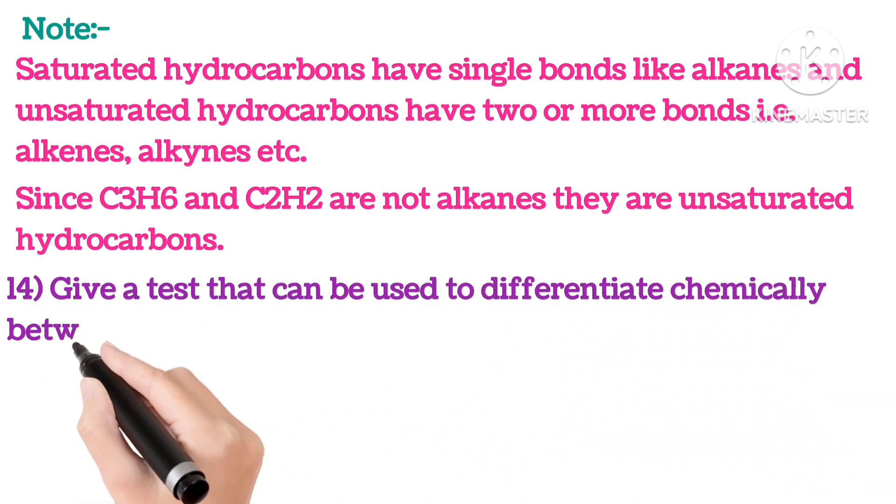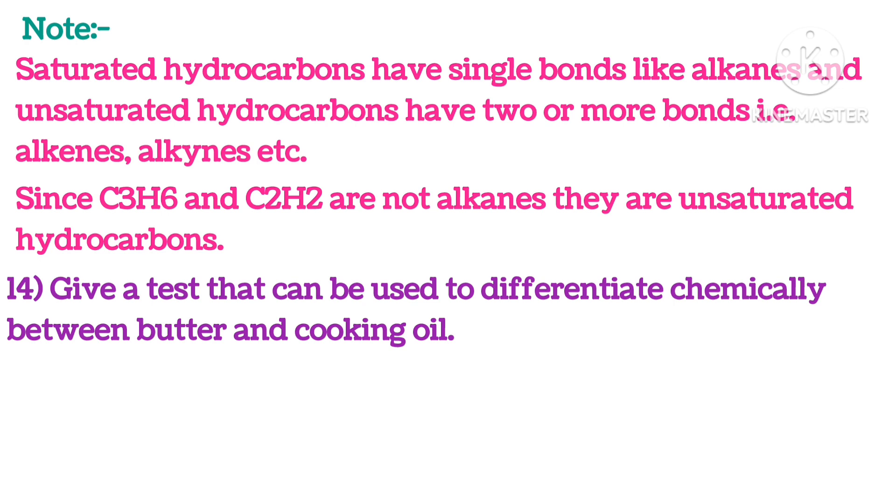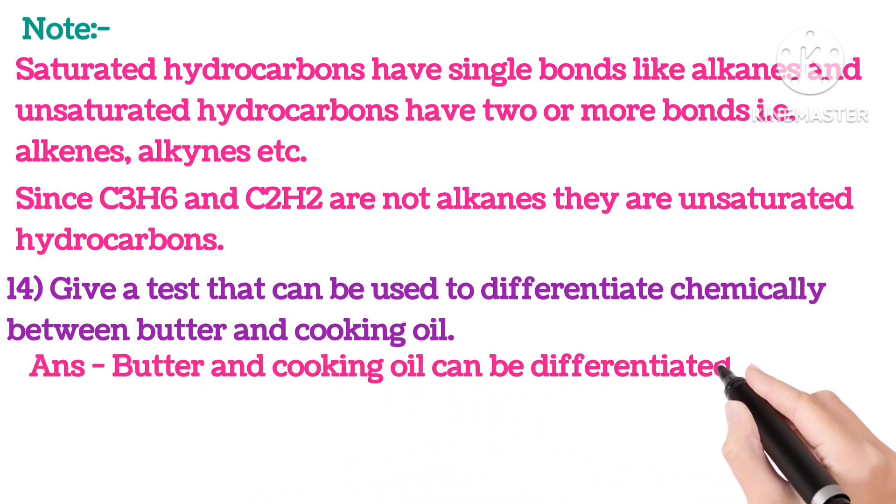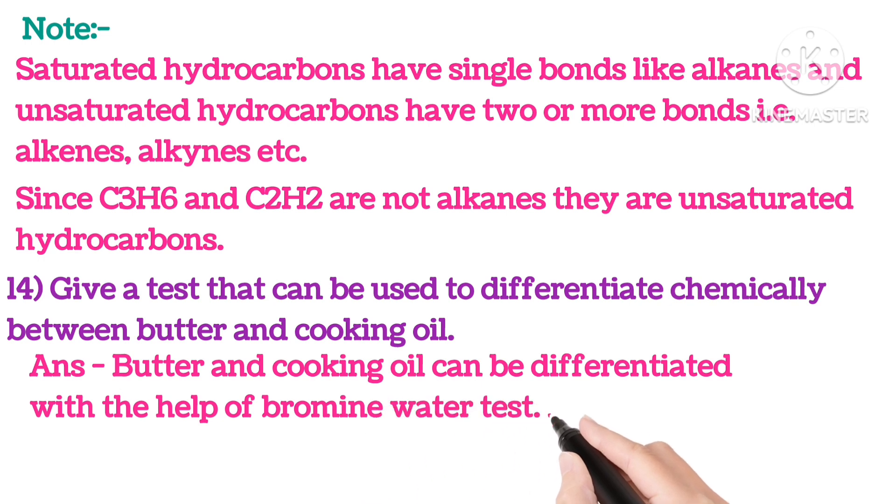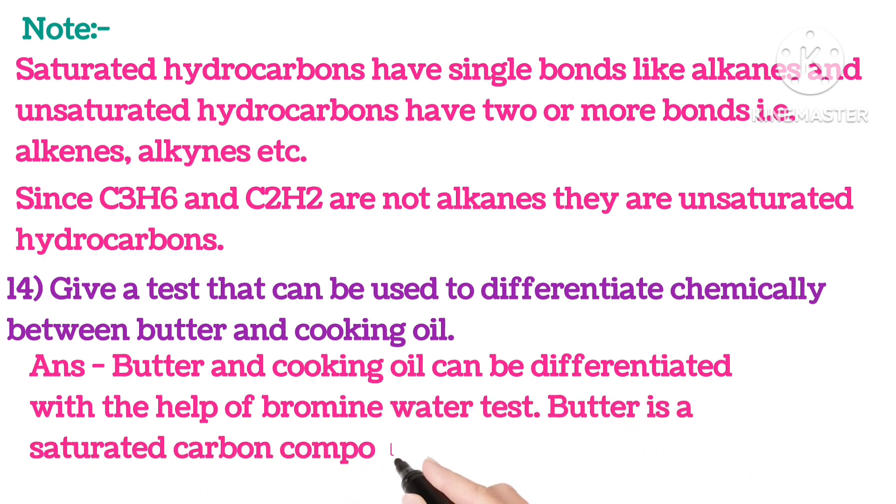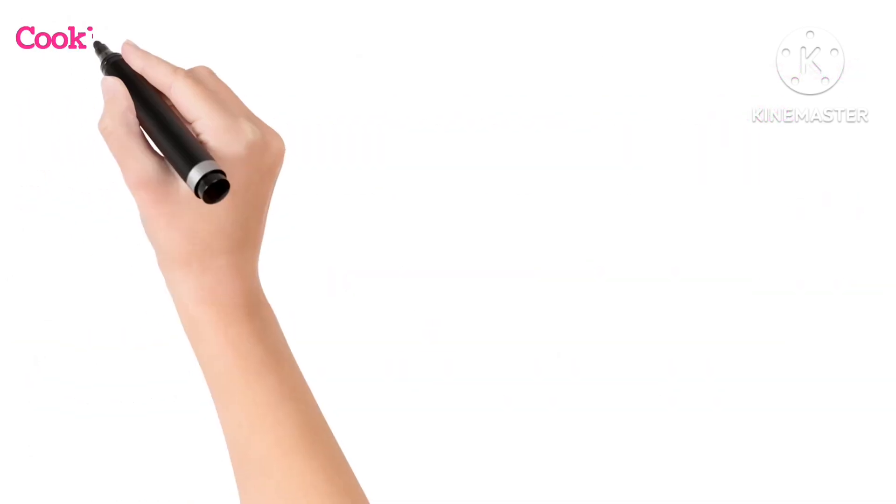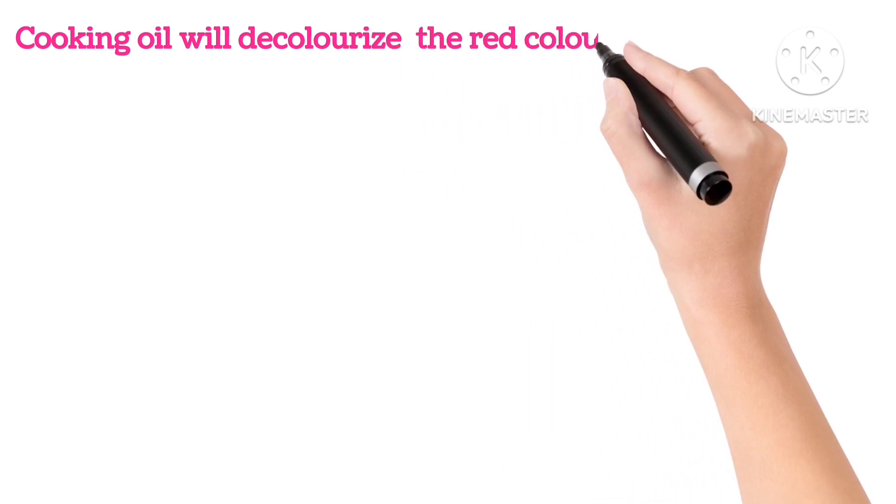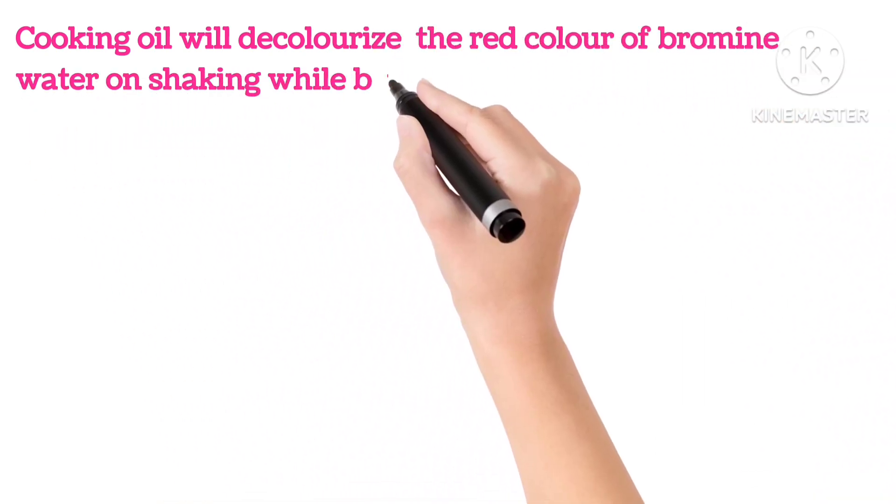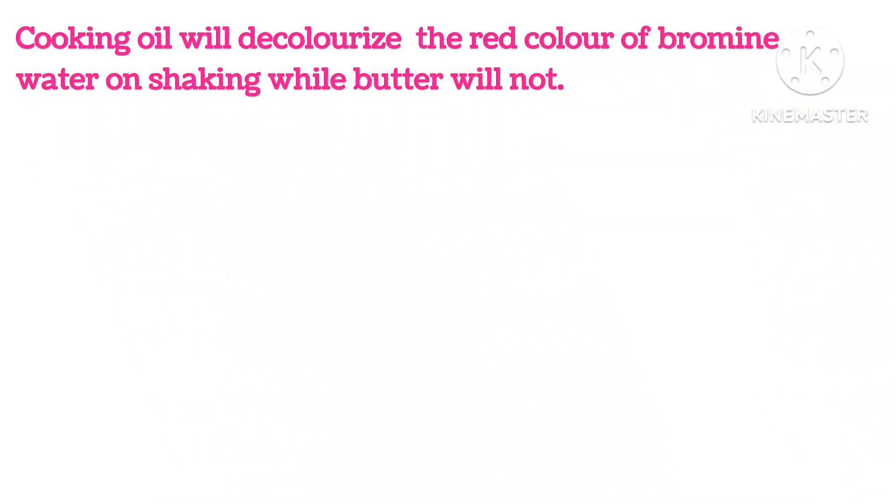Fourteenth, give a test that is used to differentiate chemically between butter and cooking oil. Butter and cooking oil can be differentiated with the help of bromine water test. Butter is saturated carbon compound while cooking oil is an unsaturated carbon compound. Cooking oil will decolorize the red color of bromine water on shaking while butter will not.